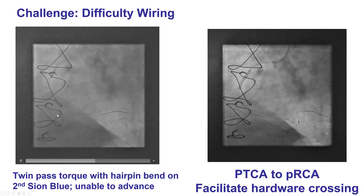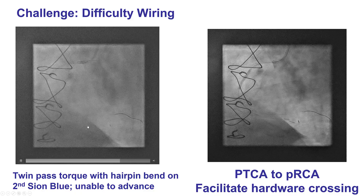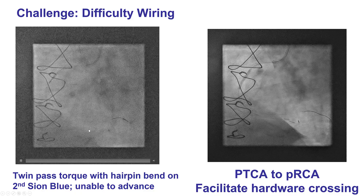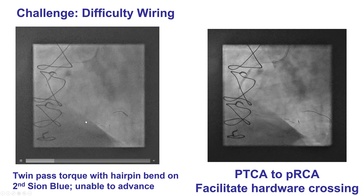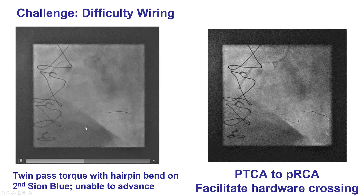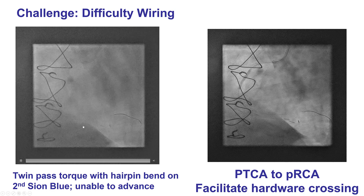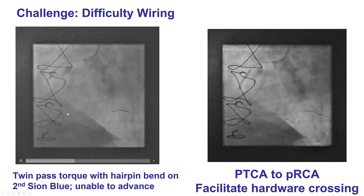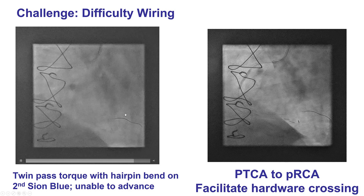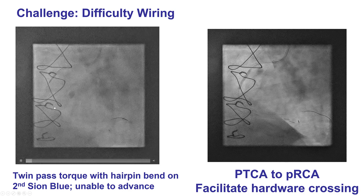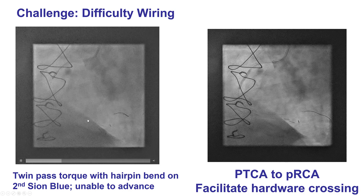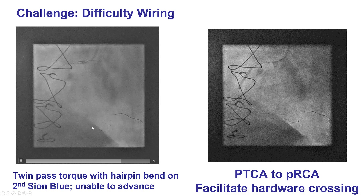However, it was quite challenging to get into the PDA because the vessel was tented, as we saw previously, from the saphenous vein graft. We advanced a guidewire into the posterior lateral, but then had a lot of difficulty getting a wire into the PDA.